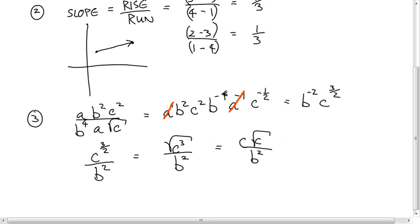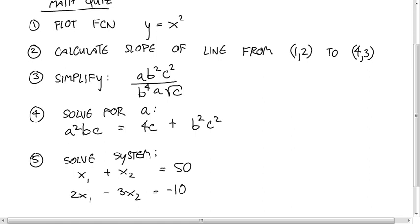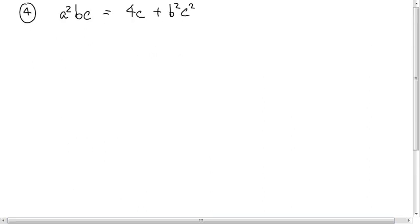And then the last one. Oh yeah, number four. We're trying to solve that equation for a. So we have a squared times bc is equal to 4c plus b squared c squared. Is that right? Yeah. Okay. Okay, so the first thing we want to do is get a by itself, or, you know, a to whatever power by itself. So let's divide both sides by bc. You get a squared is equal to 4c plus b squared c squared divided by bc.